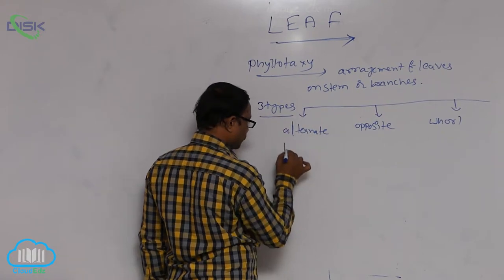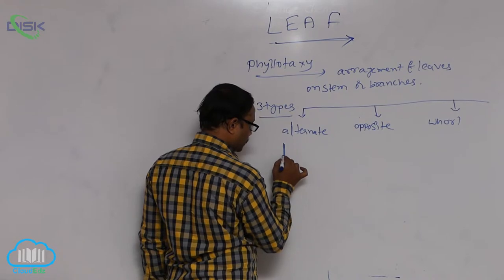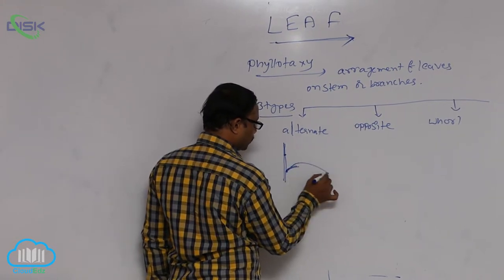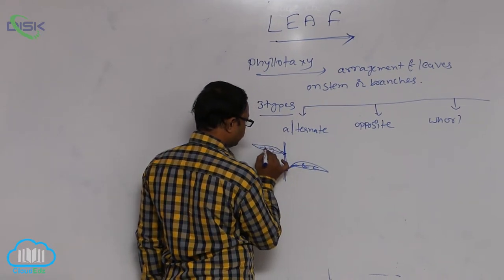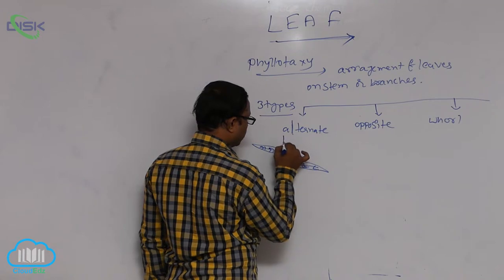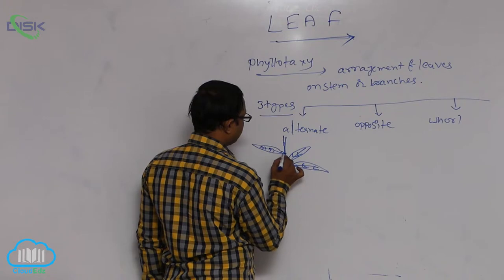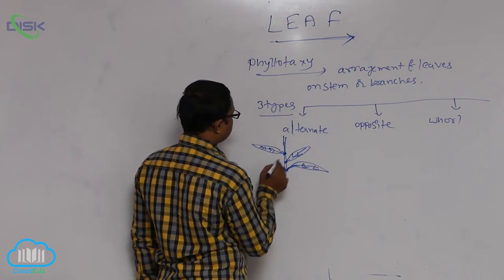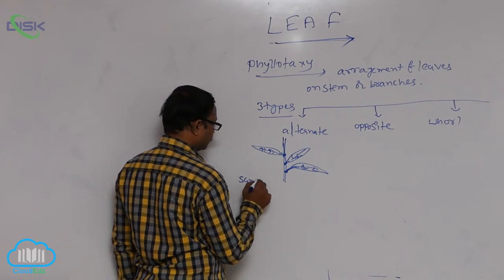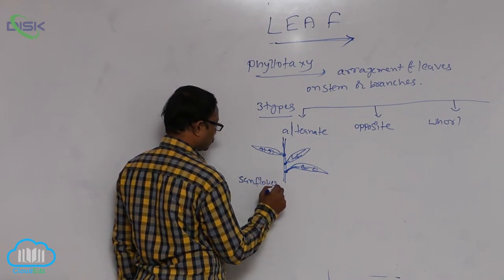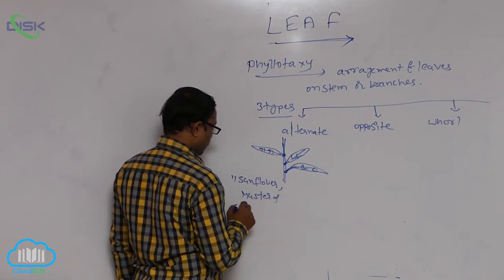In alternate phyllotaxy, at every node only a single leaf is formed. Examples of alternate phyllotaxy include sunflower, mustard, and china rose.